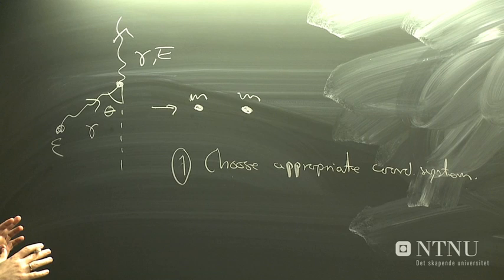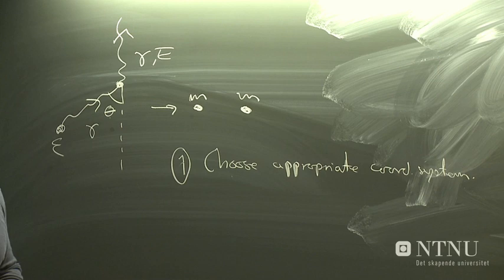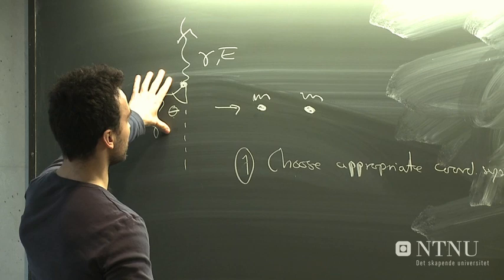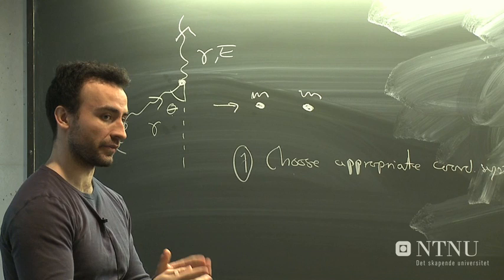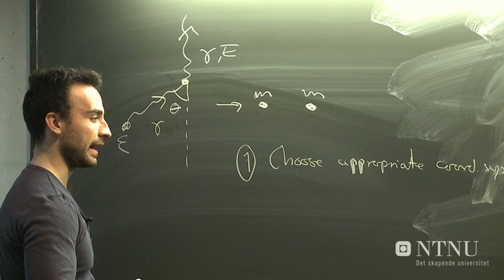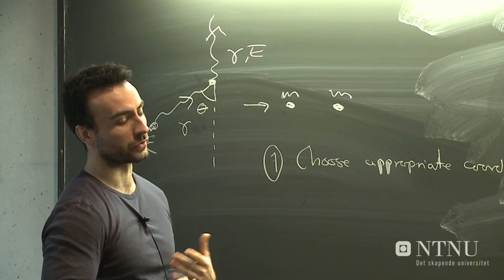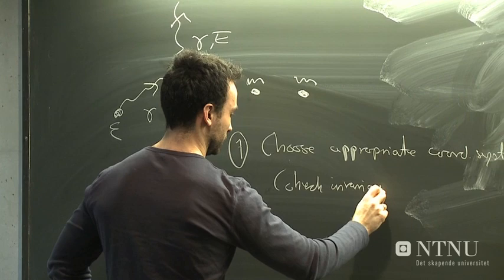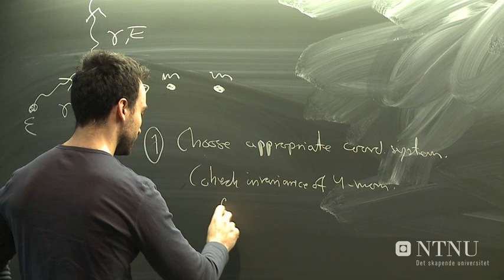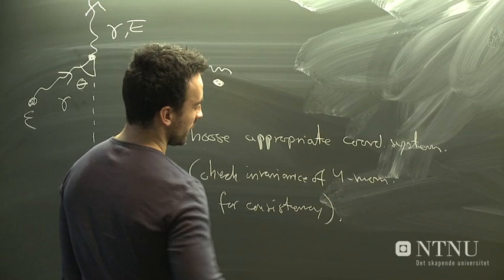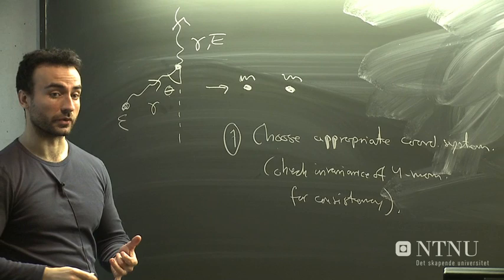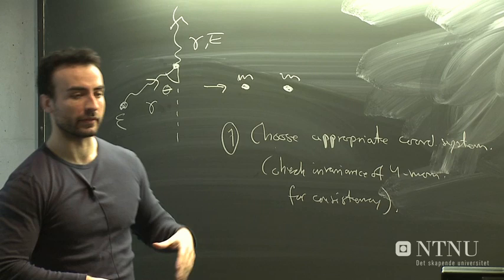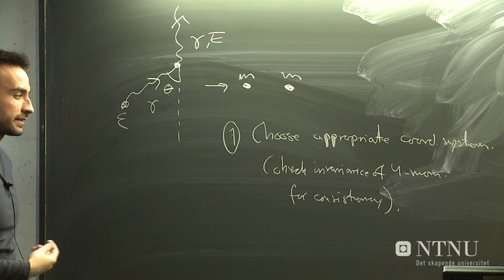First of all, we got rid of the complication with this incident angle theta by choosing an appropriate coordinate system in which the total momentum of these two photons would be directed along one axis. As a check that our results in this new, more convenient system would be correct, we checked the invariance of the four-momentum. So that was the first thing we did.